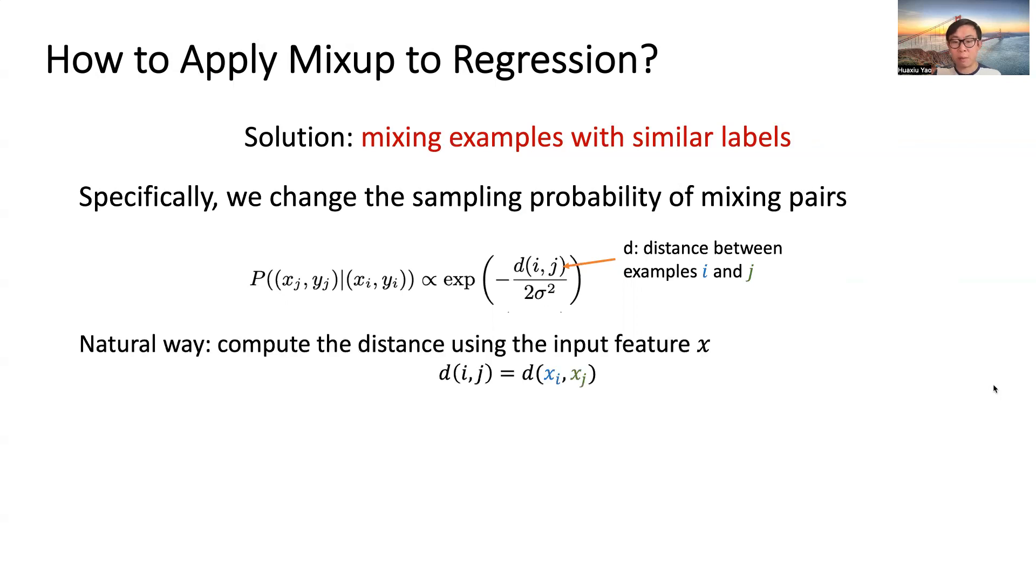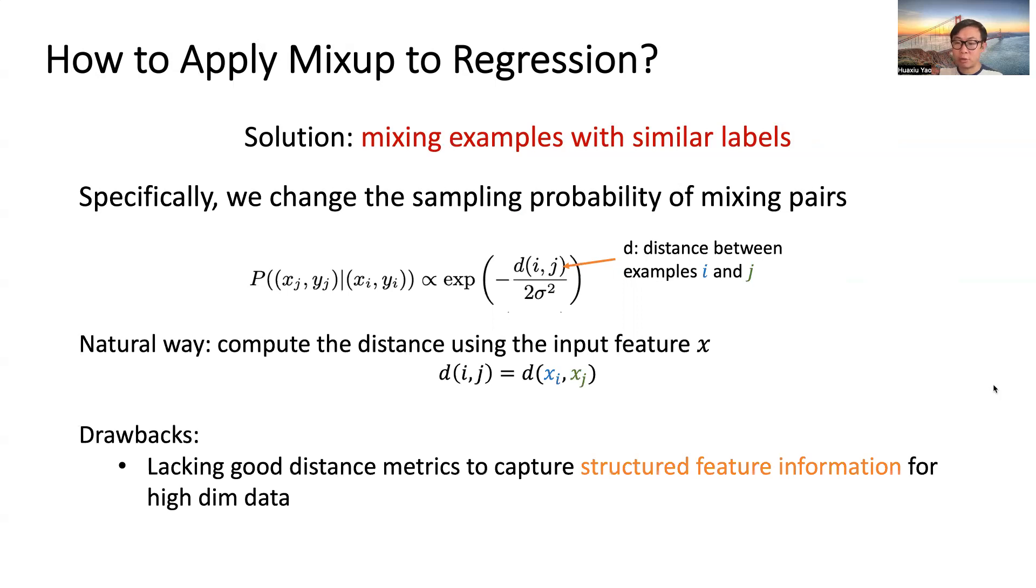A natural way is to compute distance using the input feature X. However, it has two major drawbacks. First, it lacks good distance metrics to capture structured feature information for high-dimensional data like images or time series. Second, the distance between features can be easily influenced by feature noise.